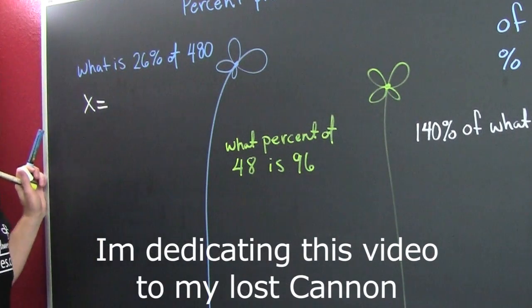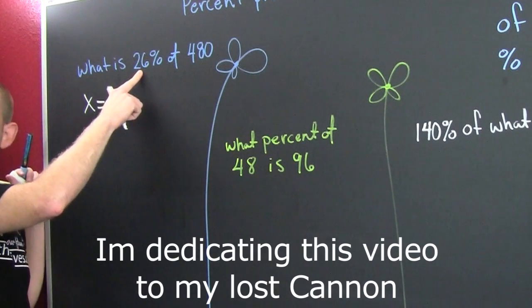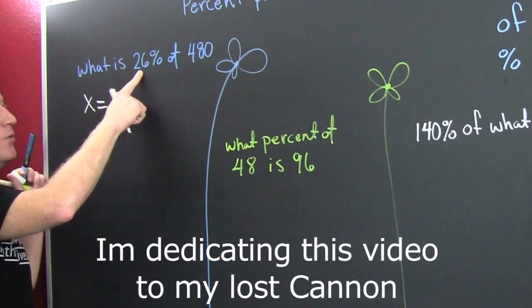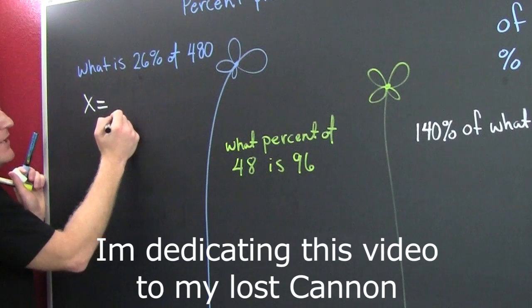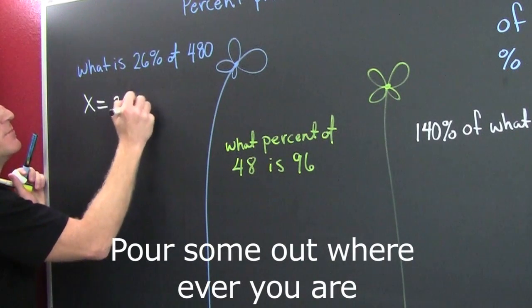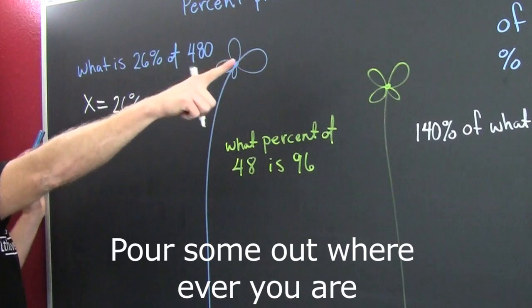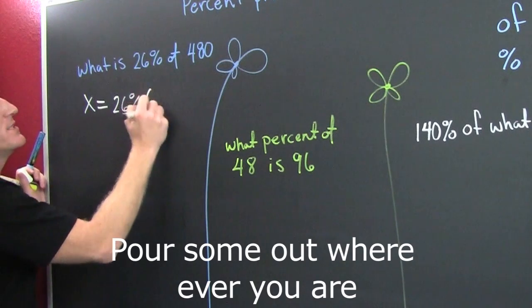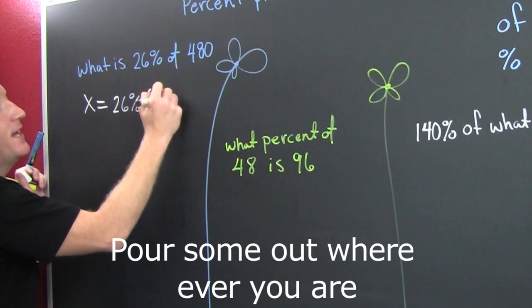This is direct translation. How do we write 26% as a decimal? Well, we go to the one spot in the back of our head, but since we have all this room, why don't I put 26%? What does of mean? Of means times. So it's times 480.